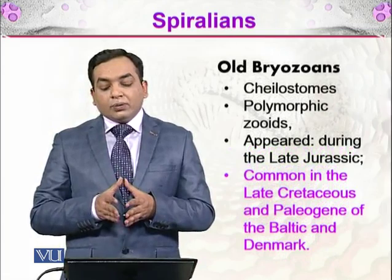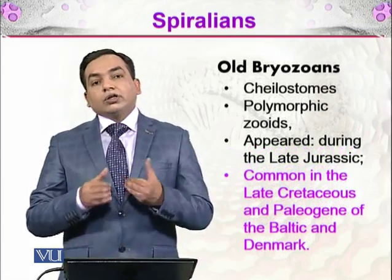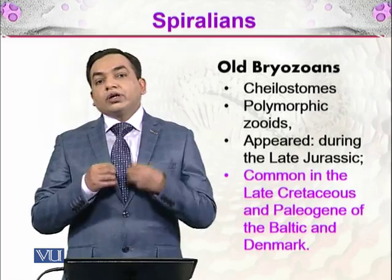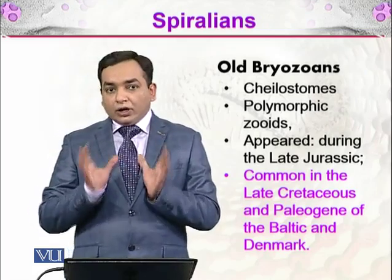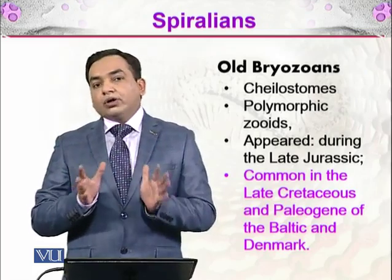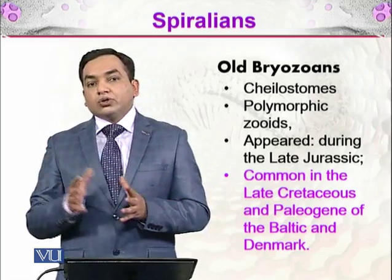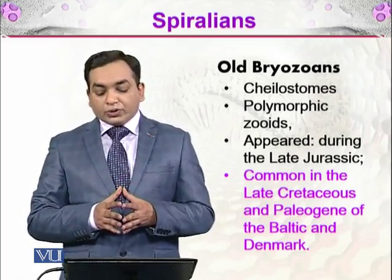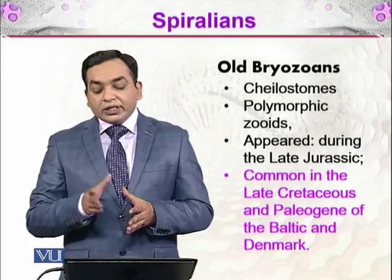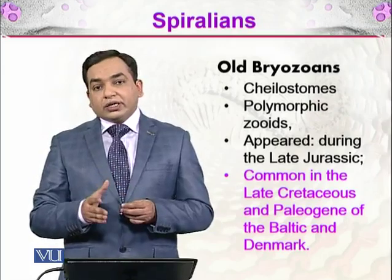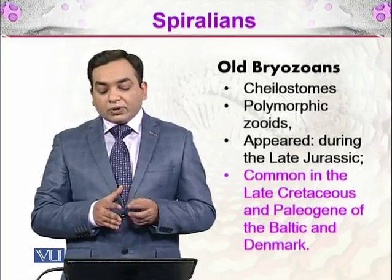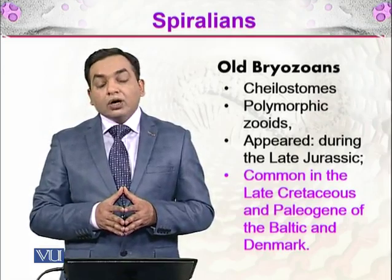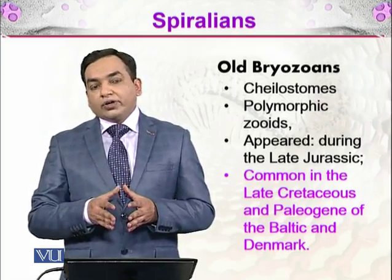The Cheilostomes are polymorphic zoids — meaning that in a colony, there are individuals specialized to perform different functions, and these are called polymorphic zoids. The Cheilostomes appeared during the late Jurassic era and were common in the late Cretaceous and Paleogene of the Baltic and Denmark region.